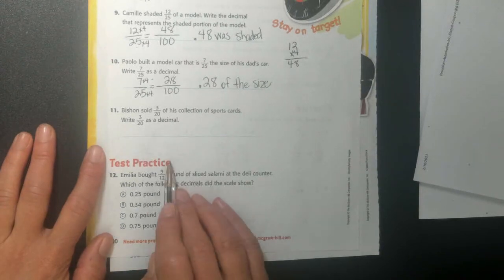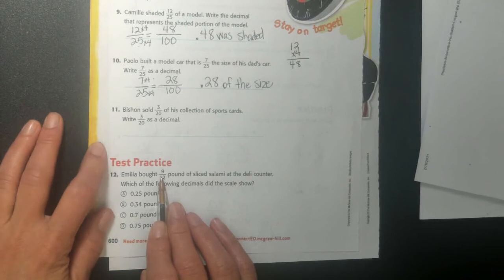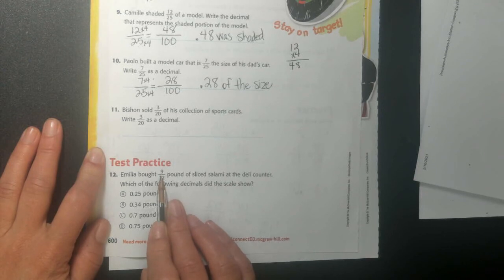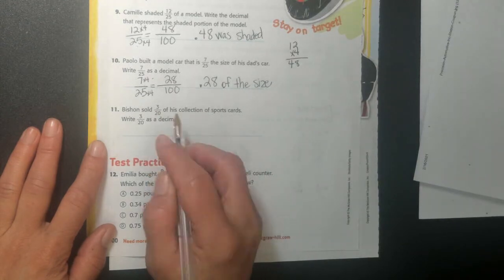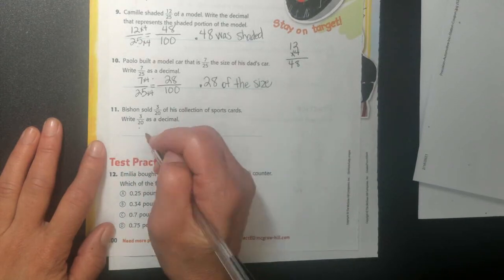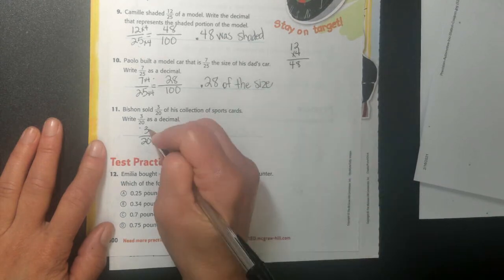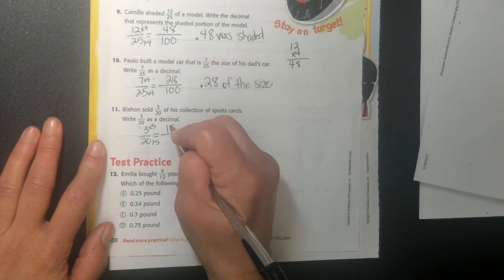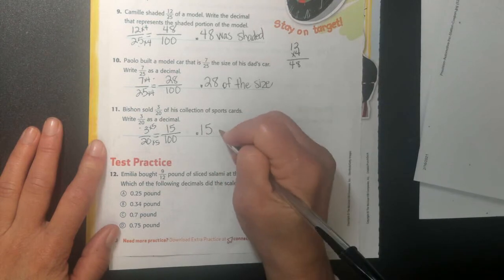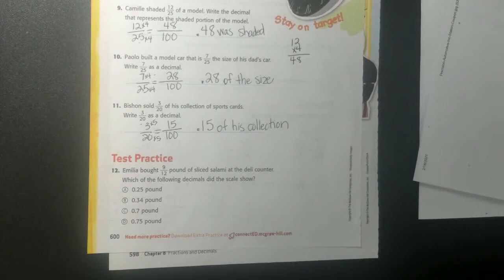So the bottom one, the test practice one, is trickier and they didn't do it where I can turn this nice and even into a 10, 100, a thousand. Right, they didn't do that for me here. But I do see what they did here for me that I could do it the other way. Alright, we'll do it two ways. So 3 over 20. We'll do this one. Bichon sold 3 twentieths of his collection of sports cards. Right, write 3 twentieths as a fraction. So I'll write 3 over 20. I need to change my 20 into 100. I'll do times 5. So whatever I do to the bottom, I do to the top, times 5. So I'll have 15 over 100, which is going to be 0.15. And I'll just say of his collection he sold that much, 15 hundredths of his collection.